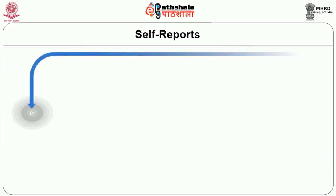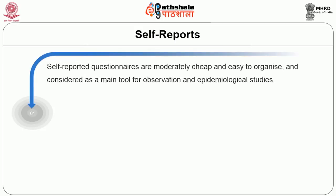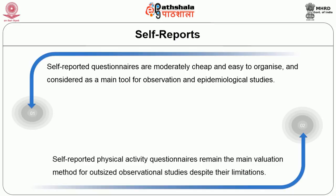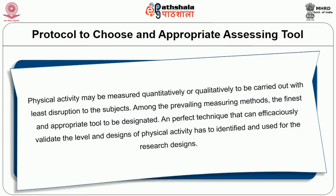The self-reported questionnaire method is moderately cheap and easy to organise, and considered a main tool for observational and epidemiological studies. Self-reported physical activity questionnaires remain the main evaluation method for large observational studies despite their limitations. Physical activity can be measured quantitatively or qualitatively with least disruption to the subject. Among prevailing measuring methods, the finest and appropriate tool should be designated first, and the perfect technique that can effectively validate the levels and patterns of physical activity should be identified and used for research purposes.